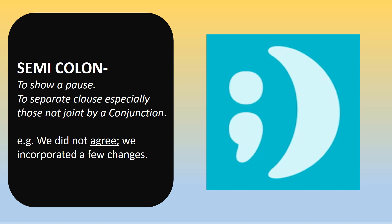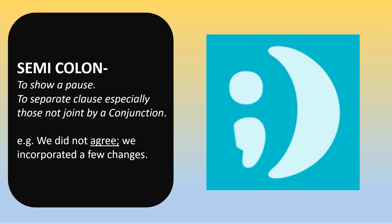Semicolon: it shows a pause, especially in sentences not joined by a conjunction. Example: 'We did not agree; we incorporated a few changes.' 'The weather was great; we went for a walk.' Here, the conjunction is not used.